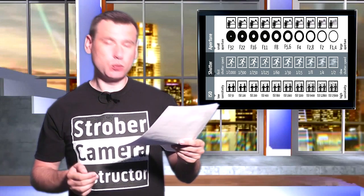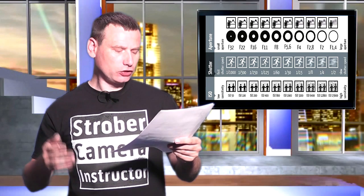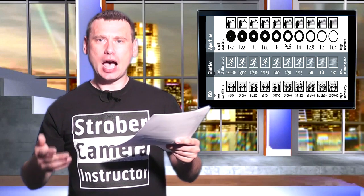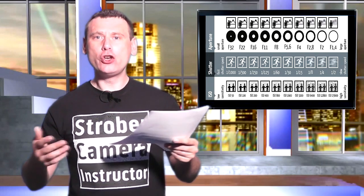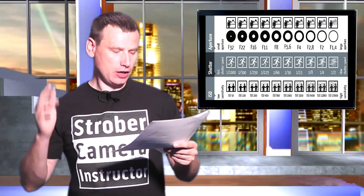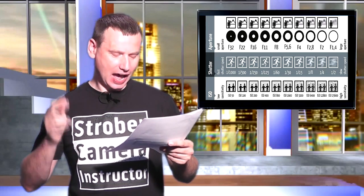Let's go back to 1/60th of a second. And now let's move down to 1/500th of a second. This now means that we've gone down by three stops — one, two, three. Now you understand stops as a unit of measurement in photography with reference to aperture, shutter speed, and ISO.